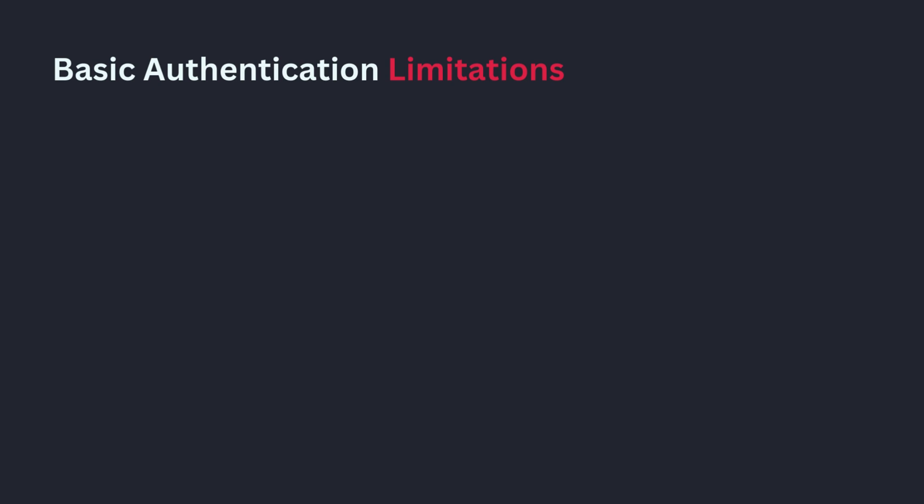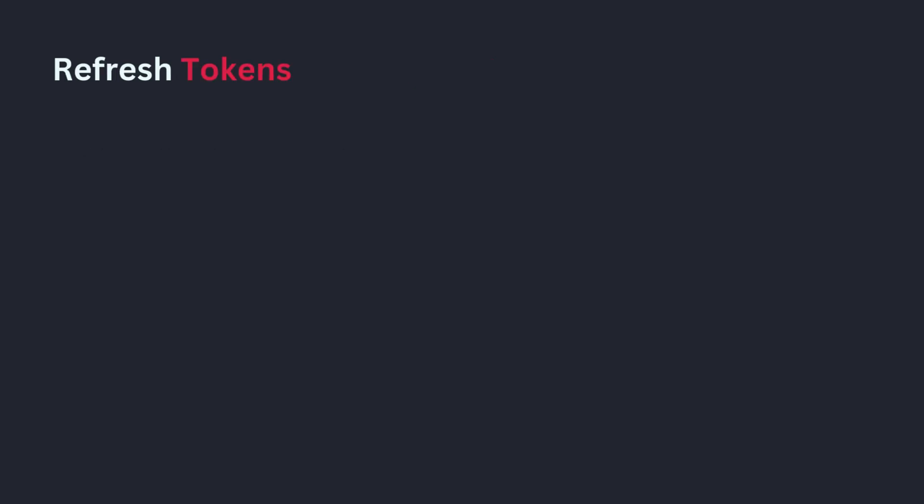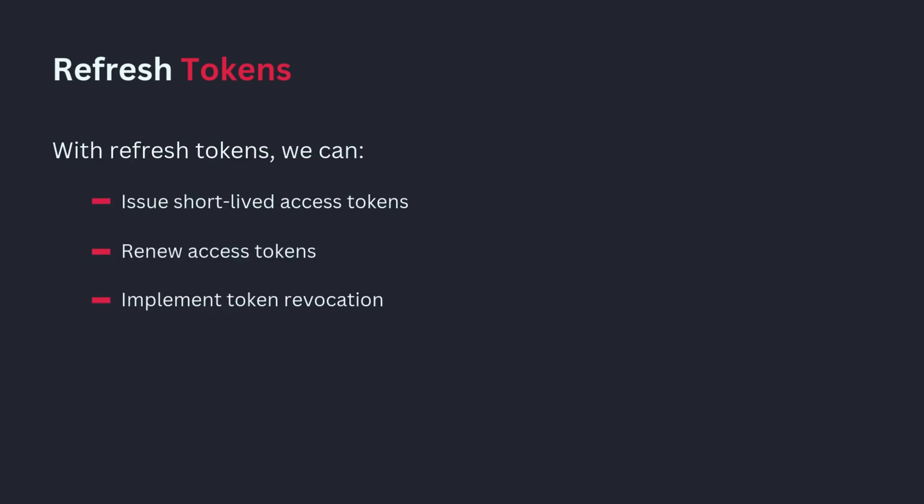This current setup is a great starting point, but it has some limitations. While access tokens should expire quickly for security reasons, it requires users to log in repeatedly, which isn't practical. Also, if you ever need to invalidate a token, there's no built-in way to do that with just an access token. Let's take this authentication system to the next level by adding refresh tokens. With refresh tokens, we can issue short-lived access tokens to reduce security risks while maintaining a seamless user experience, easily renew access tokens without forcing the user to log in again, and implement token revocation for an additional layer of security.